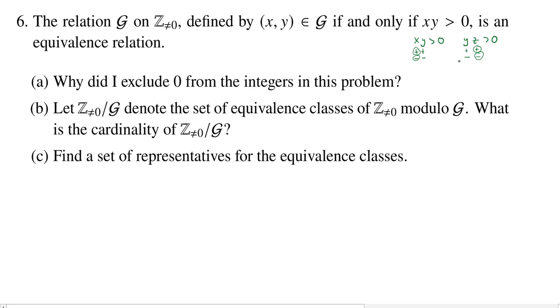So, transitivity. All right, but you didn't have to show that. Okay, so let's look at what we are asked. Well, the first question is why did I, the person who wrote the question, exclude zero from the integers in this problem?